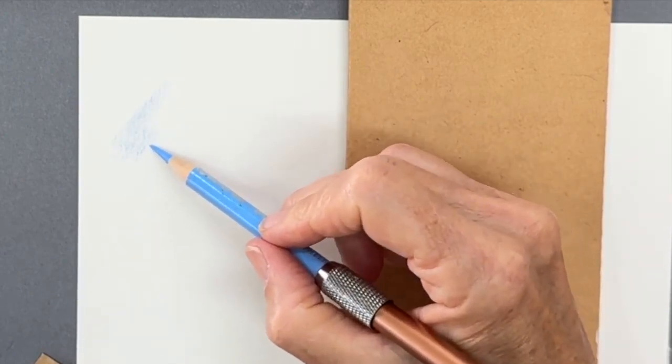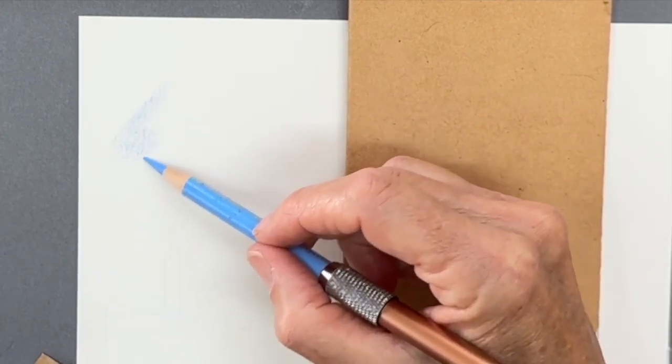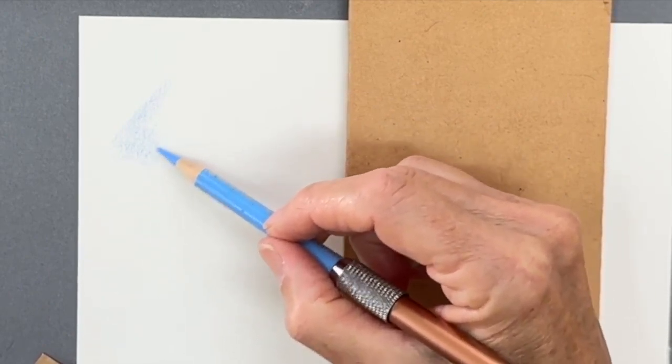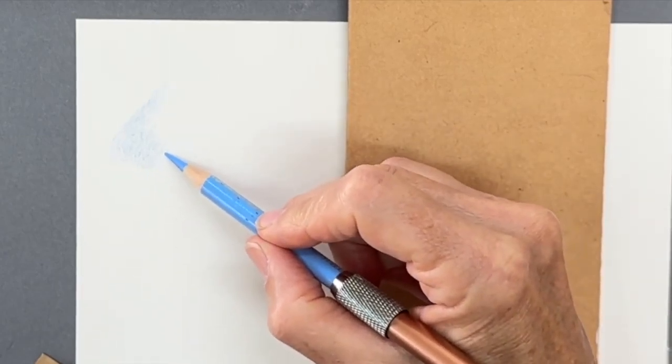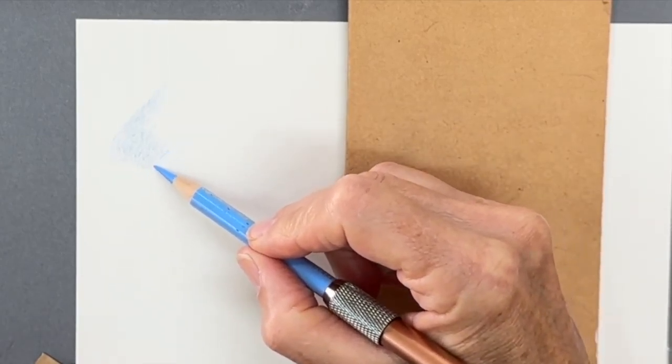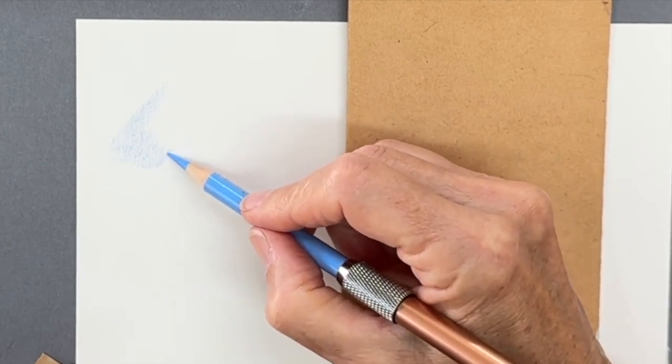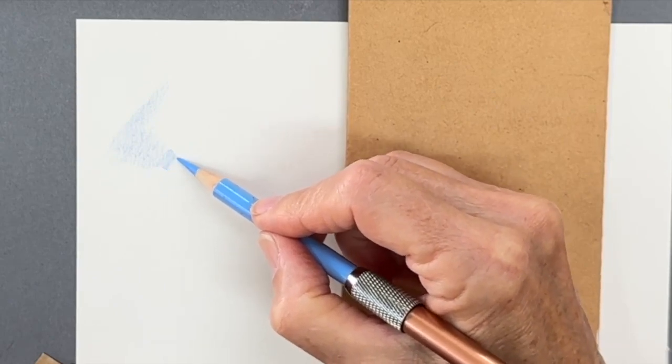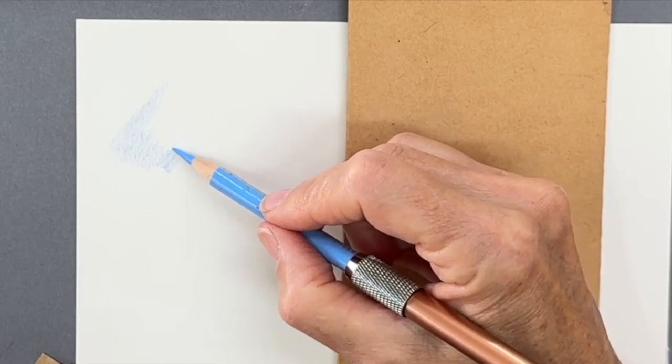Another issue that happens is if you're working in a small area like this and work down repeatedly, if you press too hard as your pencil returns on itself, you can see how it leaves a hard edge.